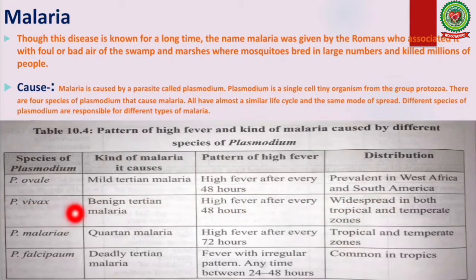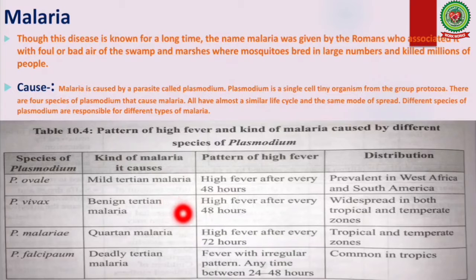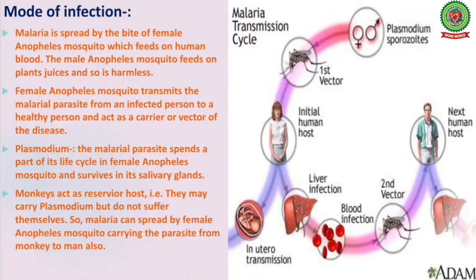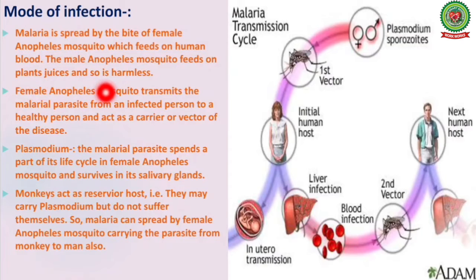The last and most violent strain is Plasmodium falciparum, which causes deadly tertian malaria — fever with an irregular pattern, anytime between 24 to 48 hours — and is common in the tropics. Now, talking about the mode of infection: malaria is spread by the bite of the female Anopheles mosquito, which feeds on human blood. The male Anopheles mosquito feeds on plant juices and is therefore harmless. The female Anopheles mosquito transmits the malarial parasite from an infected person to a healthy person, acting as a carrier or vector of the disease.